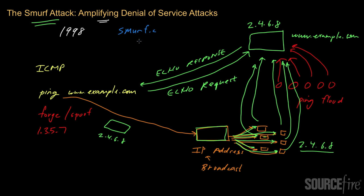There is also another attack known as Fraggle, which operates almost identically to the Smurf attack. It's analogous to Smurf, except it takes advantage of a similar issue not in ICMP packets but in packets associated with the User Datagram Protocol, UDP. It uses the broadcast address together with UDP packets to create amplification and mount a more pronounced attack. Fortunately, most systems on the internet today are no longer susceptible to either Fraggle or Smurf, but these attacks are of historical interest and offer useful lessons for architecting secure systems.